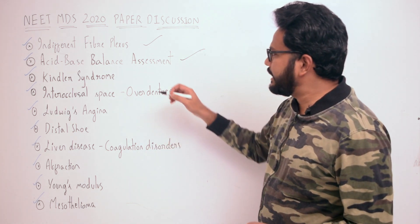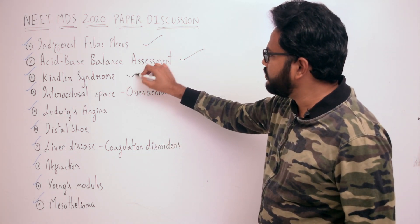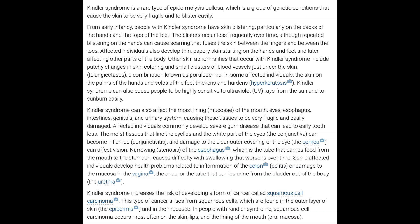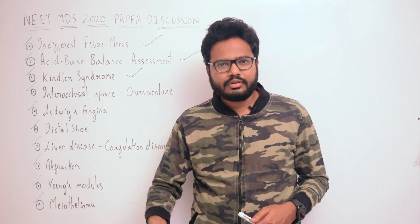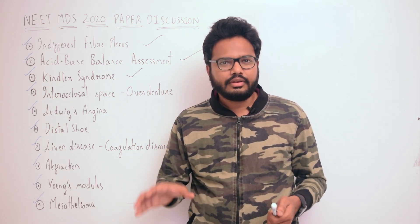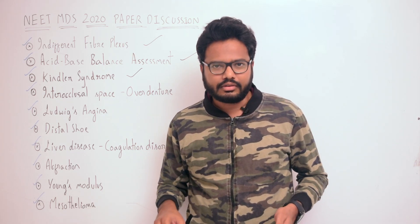Moving on to the next question: Kindler syndrome. Kindler syndrome is a rare type of epidermolysis bullosa, which is a group of genetic conditions that cause the skin to be very fragile and to blister easily. Additional information is available for further reference.